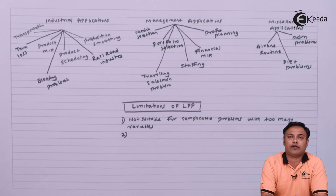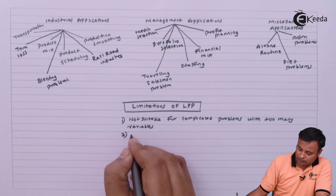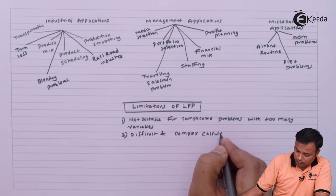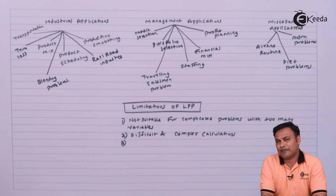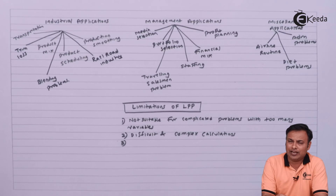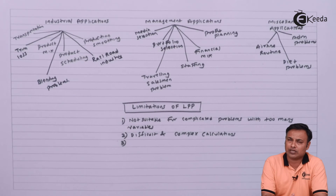The second biggest disadvantage of LPP is the difficulty and complex nature of calculations. The calculations under the simplex method are too complicated, making this method difficult for students to understand. The third factor is that it is assumed all other factors or resources remain constant during the period of study; however, in real life resources keep on changing — capital, manpower, machines — making this assumption unrealistic.